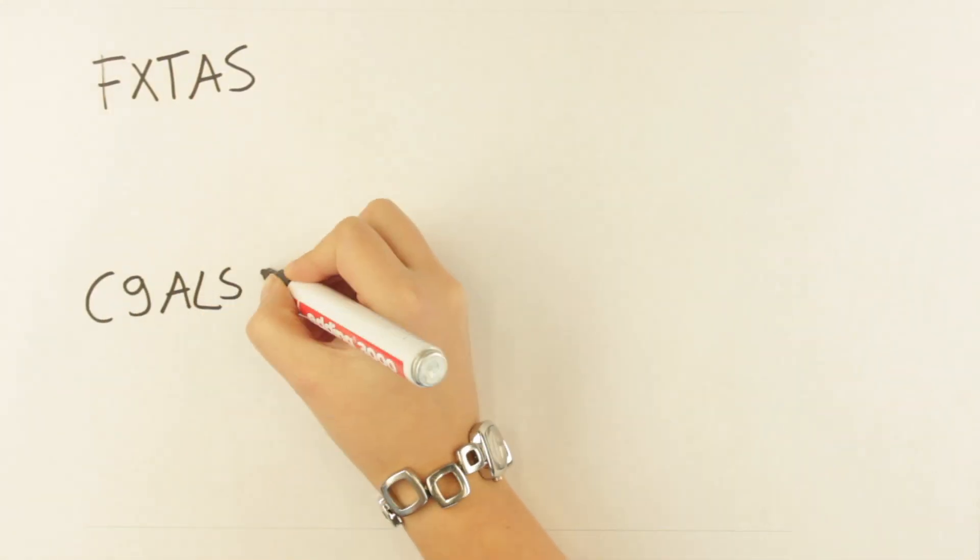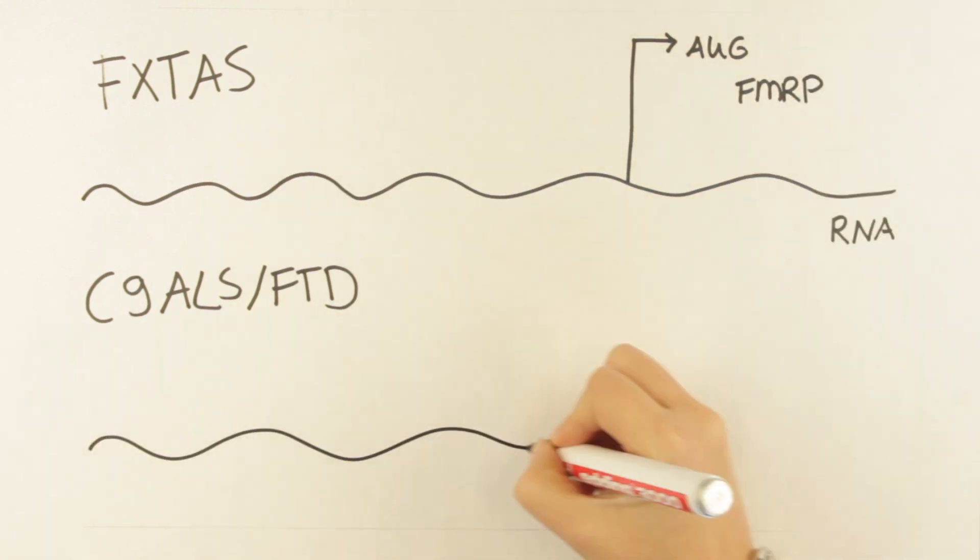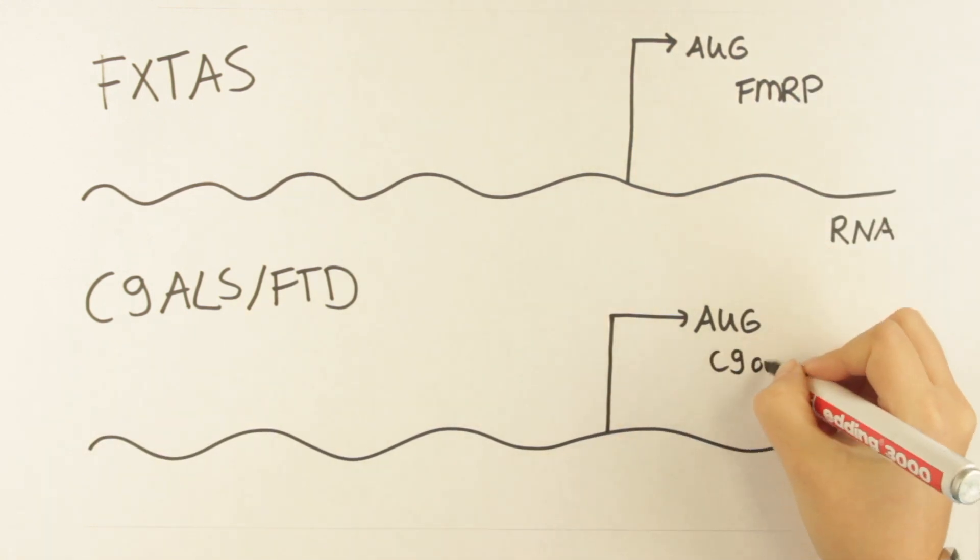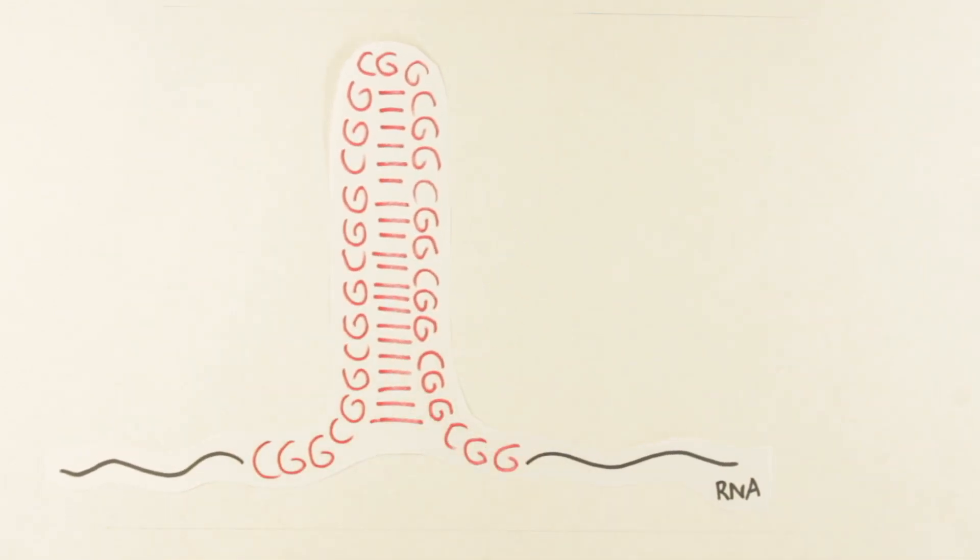In FXTAS and C9 ORF-ALS-FTD patients, the RNA coding for FMRP and C9 ORF protein is mutated by elongated repetitive sequences in the gene. If we zoom in on the mutated repeat sequence, in this case the CGG repeat sequence, we find a typical hairpin-like structure.